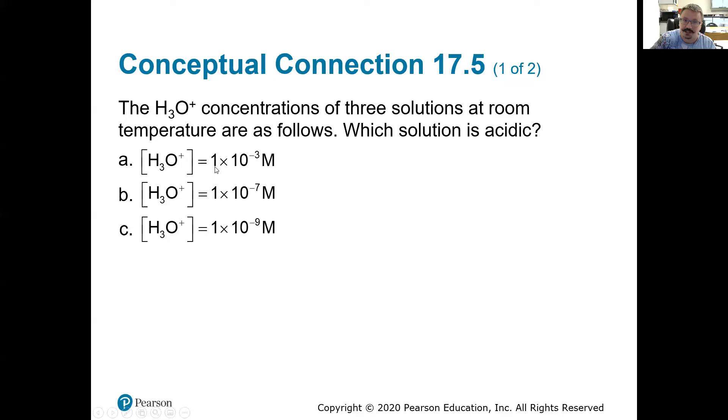So if you can't visualize this initially, you can always carry out the math on this and you can see. But really, it just breaks down to is the number above or below or equal to 1 times 10 to the negative 7. In this case, A is the only one that is greater than that. So A would be the acidic solution. B would be a neutral solution and C would actually be a basic solution.